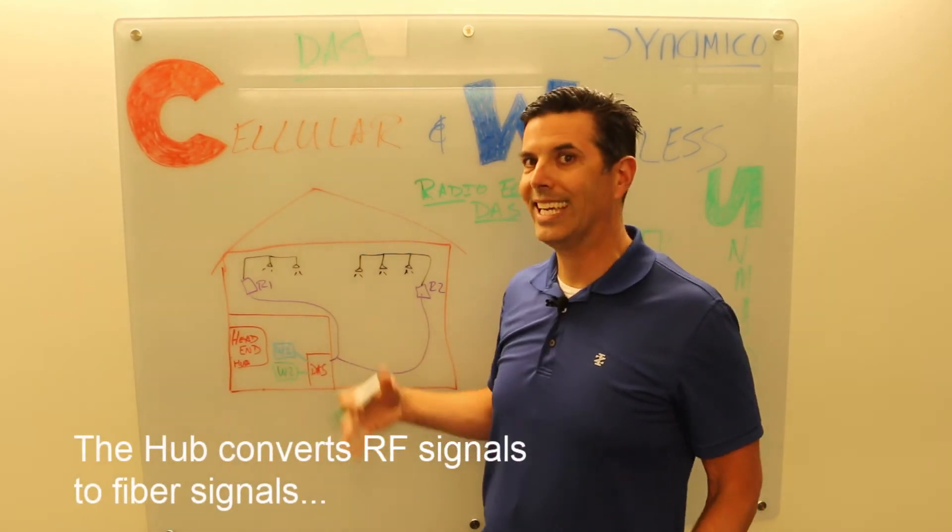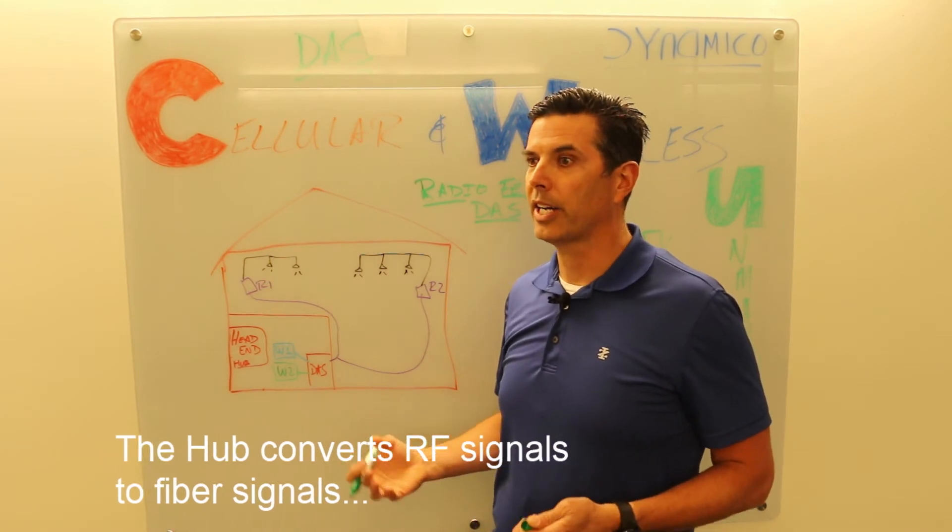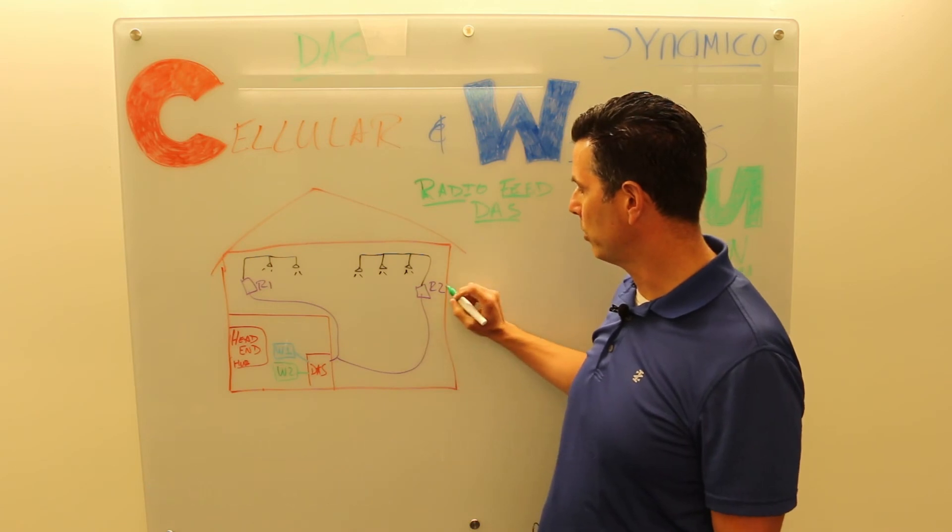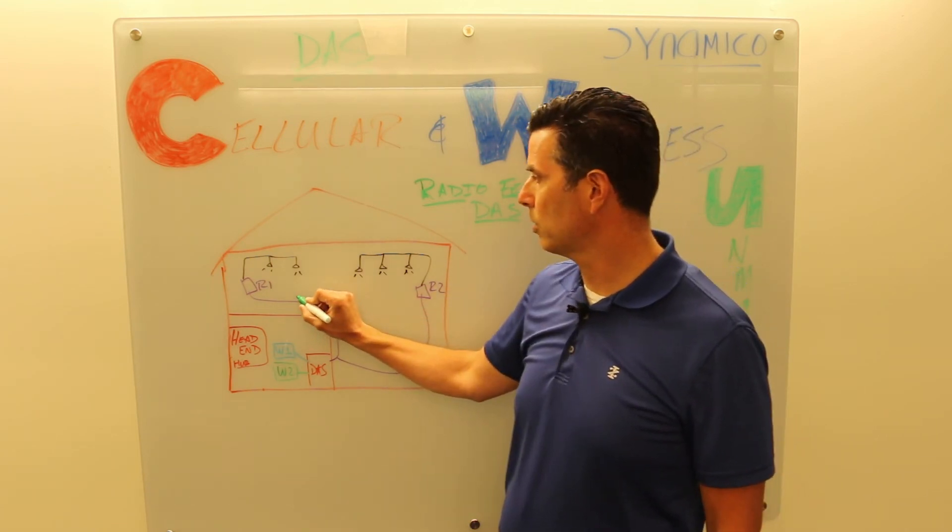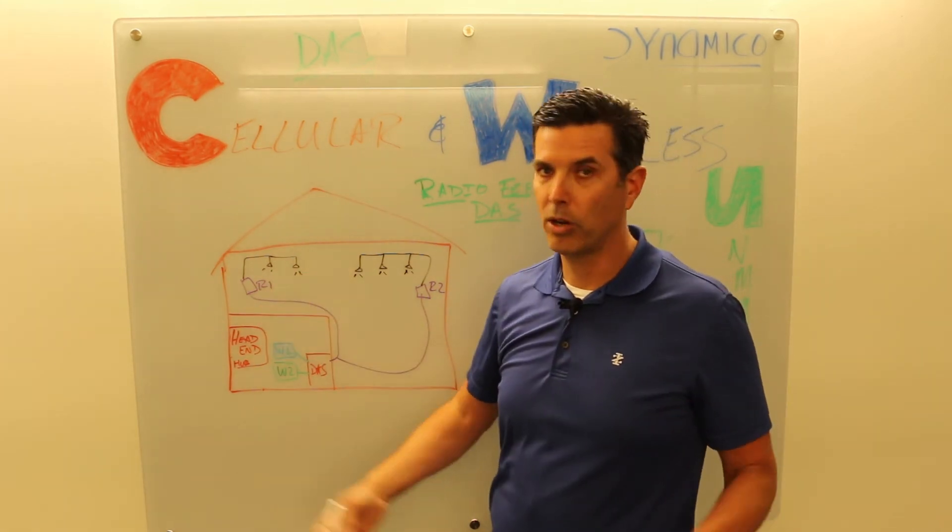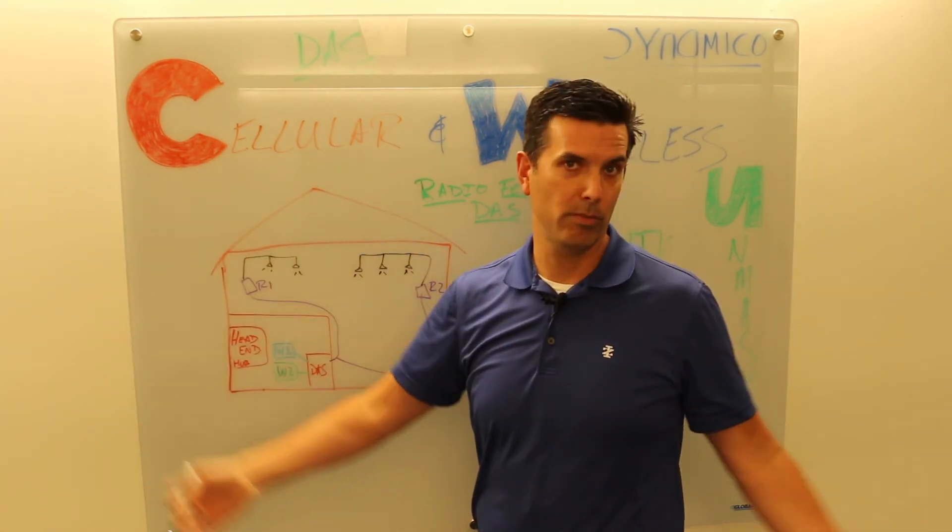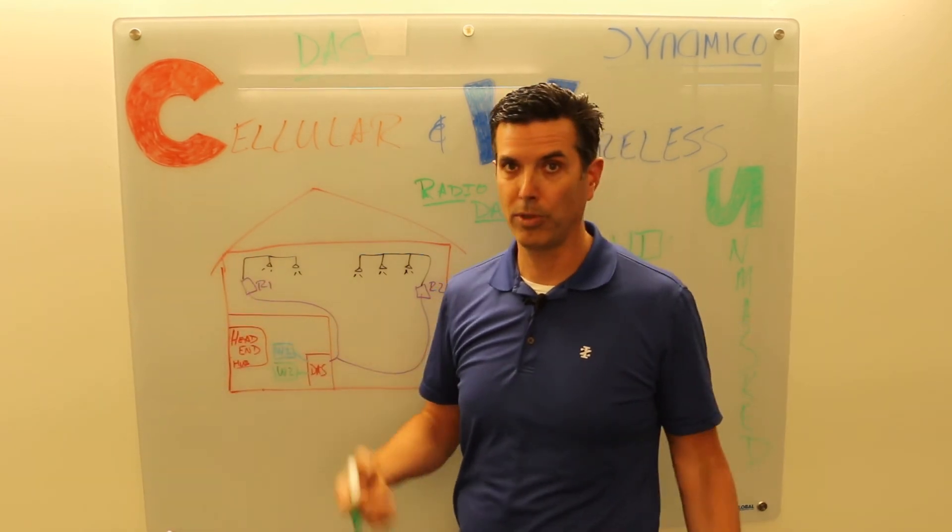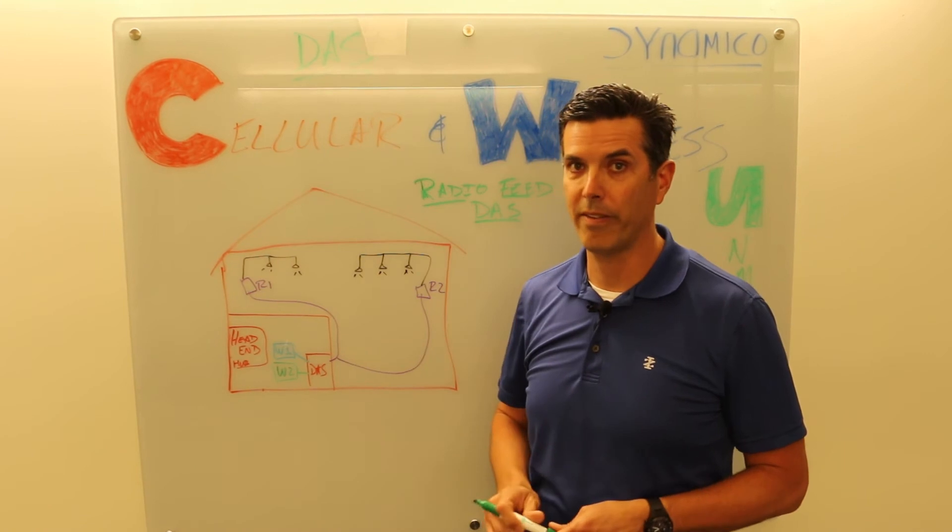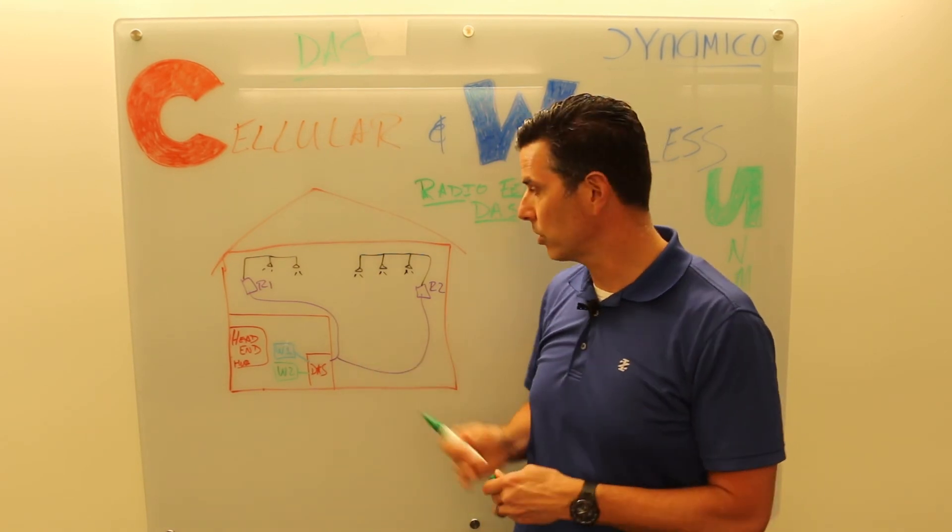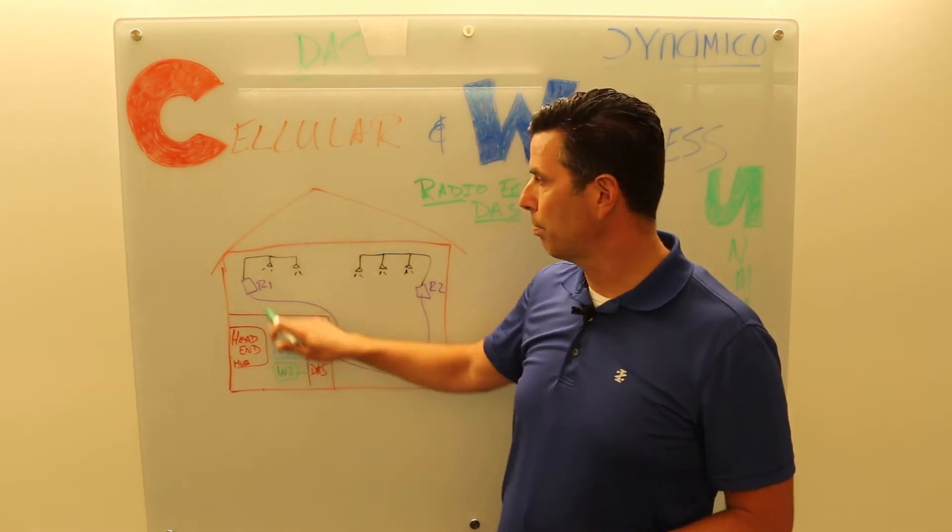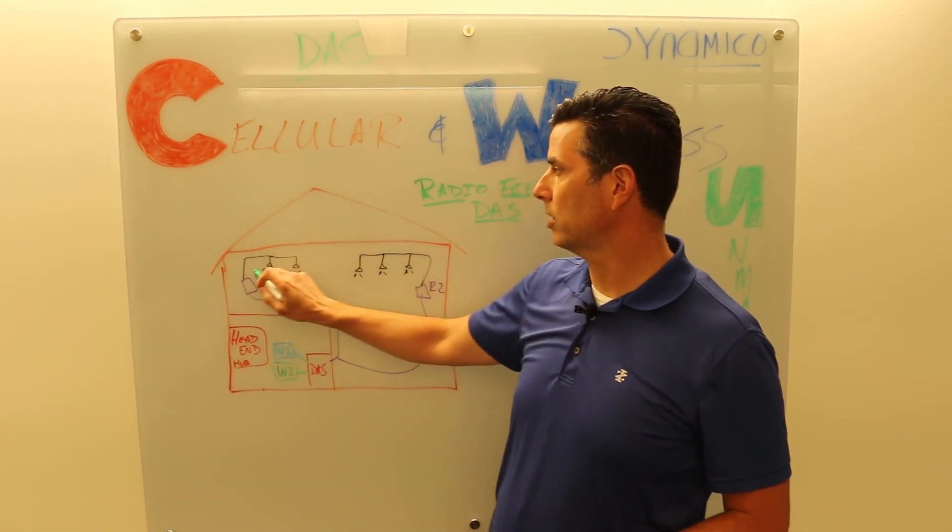Then those signals typically get converted to light via a fiber network and they go out into remotes. So this medium here is most often fiber to remote one, remote two. You can have one remote, you can have hundreds of remotes, you can have thousands of remotes. Some of the larger stadiums have a thousand remotes all over the stadium, all joined by fiber to carry those signals from the head end out to the remotes.